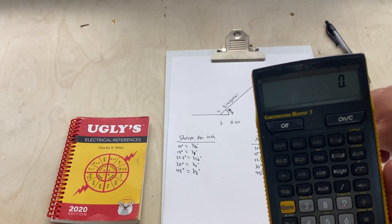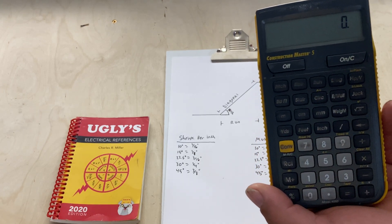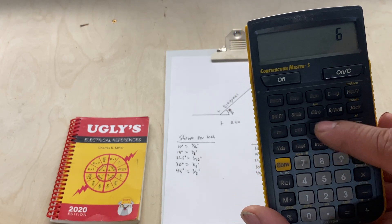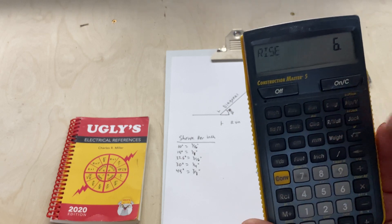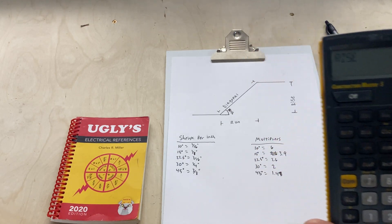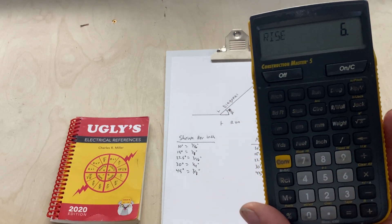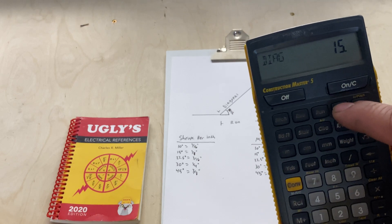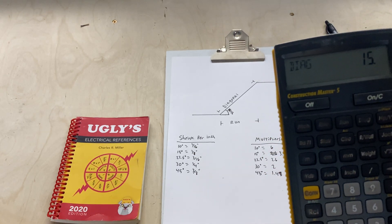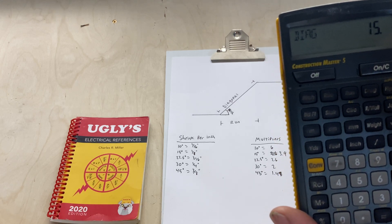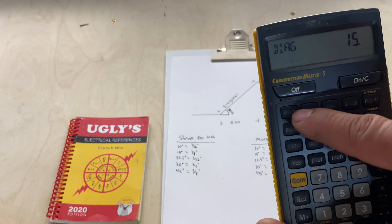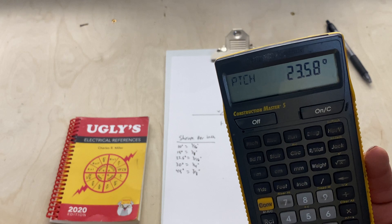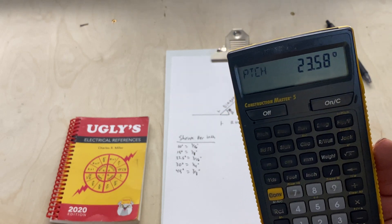Just for an example, let's say it's a six-inch rise, that's a six-inch offset that you measured. Let's say their center-to-center ends up being 15 inches. You'll put 15 diagonal because that's their center-to-center. Once you've entered those two, all you have to hit is pitch and it tells you it's about a 23 and a half degree bend.